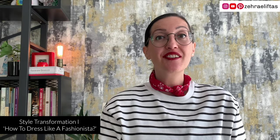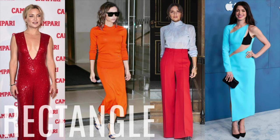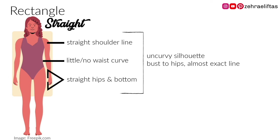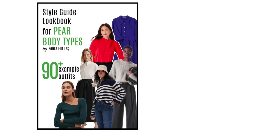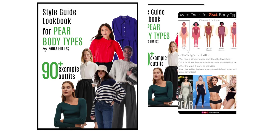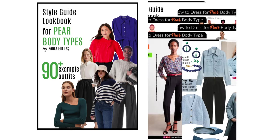And the last one is rectangle — like Kate Hudson, Anne Hathaway, Victoria Beckham, and Cara Delevingne. They have straight shoulder lines, straight hips and bottom, and little or no waist definition. Mostly it's an uncurvy silhouette from bust to hips — almost an exact straight line. Did you decide which body shape you fit in? If so, now it's time to learn how to dress for your body type.